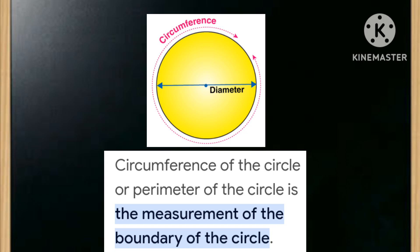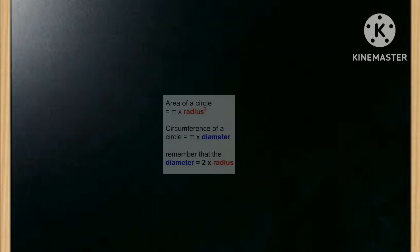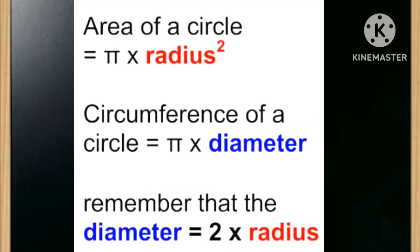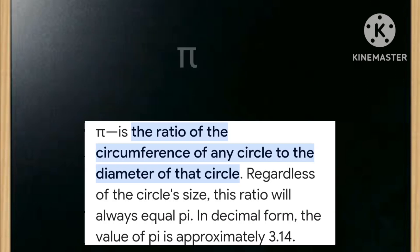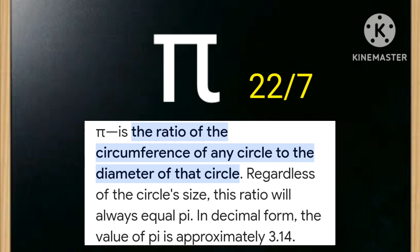Now let us discuss some important formulas related to circle. Area of a circle will be equal to pi into radius square or pi r square. Circumference of a circle will be equal to pi into diameter and remember that the diameter will be equal to 2 into radius. Now what is pi? Here pi is the ratio of the circumference of any circle to the diameter of that circle. Approximately the value of pi is 3.14 or 22 by 7.